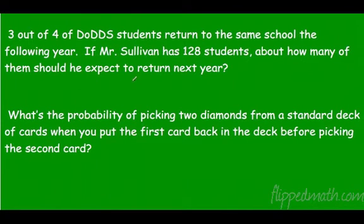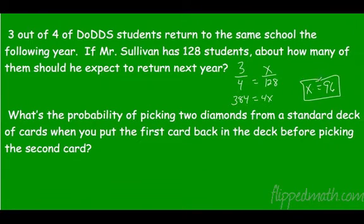Three out of four dog students return to the same school the following year. If Ms. Sylvan has 128 students, about how many would I expect back? So three out of four is how many of the 128? Multiply those together and we get 384 equals 4x, and then we would get about 96 students back. That's what we would expect. That's that reverse probability.